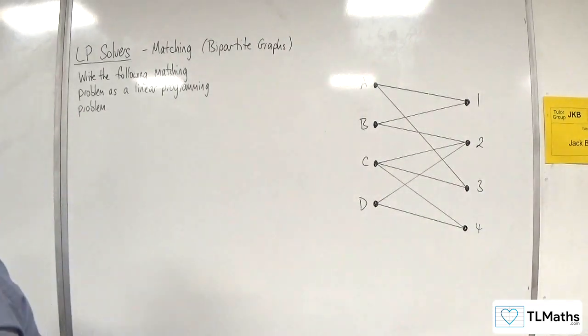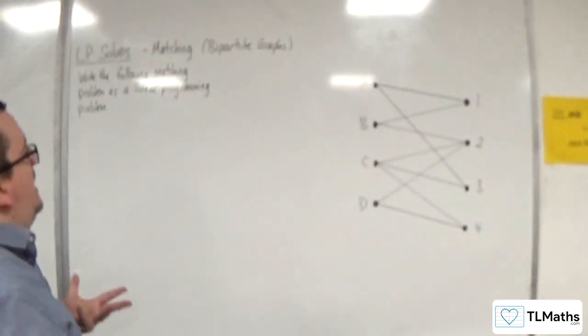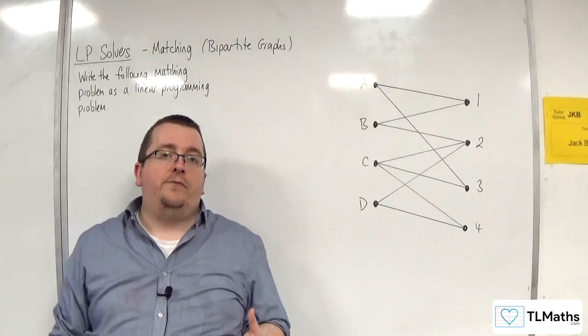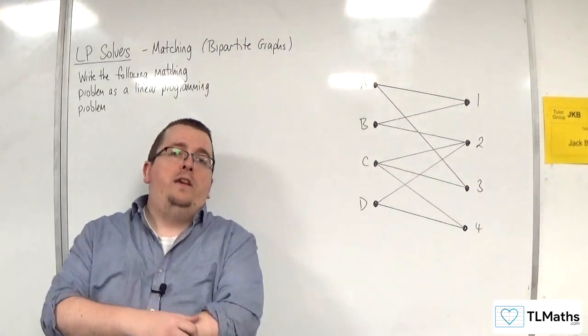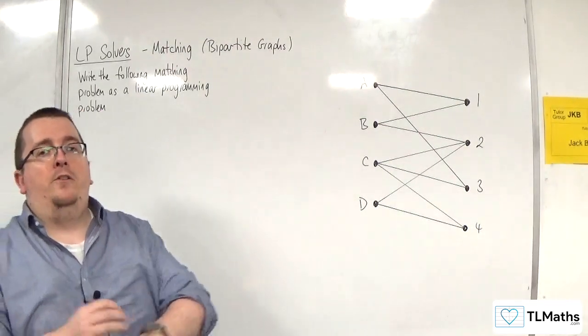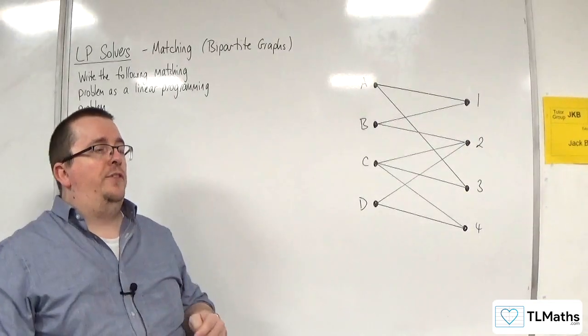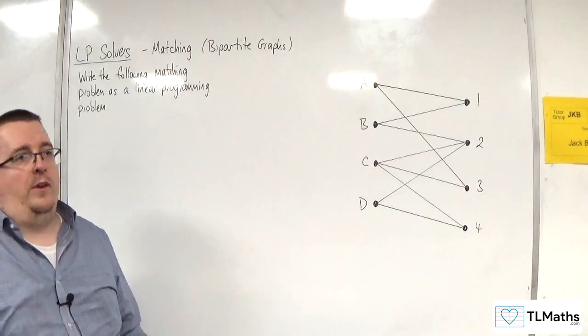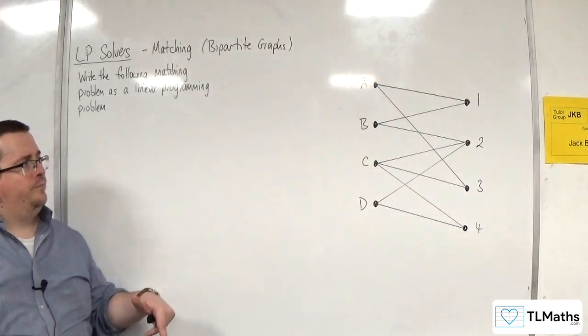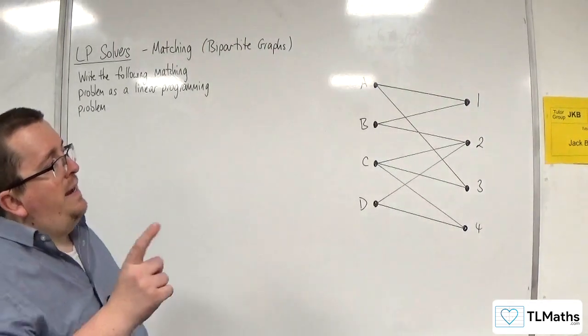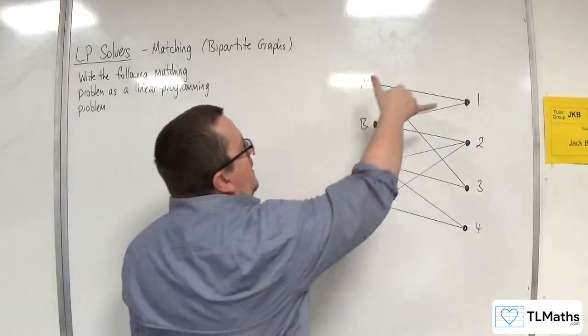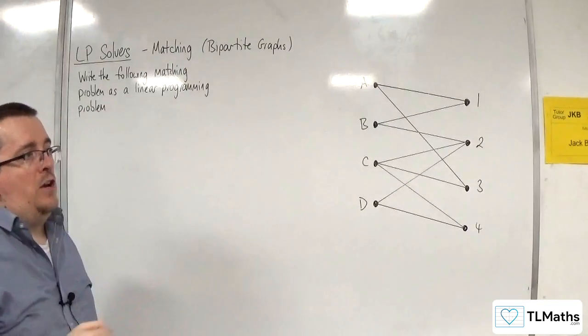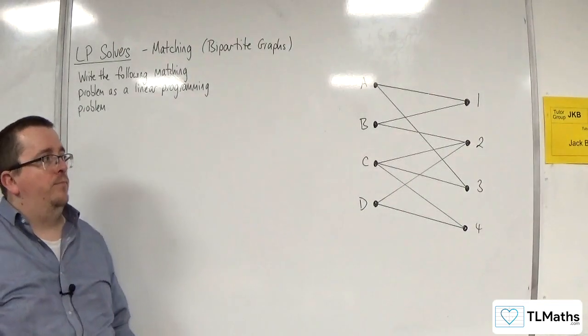So how can we write that as a linear programming problem? Well, we're going to return to indicator variables. So what we used in the first couple, the shortest path and longest path LP solvers that we looked at in this section, where that means that A1 can either take on the value 1 or 0. 1 if it's being picked, 0 if it's not.